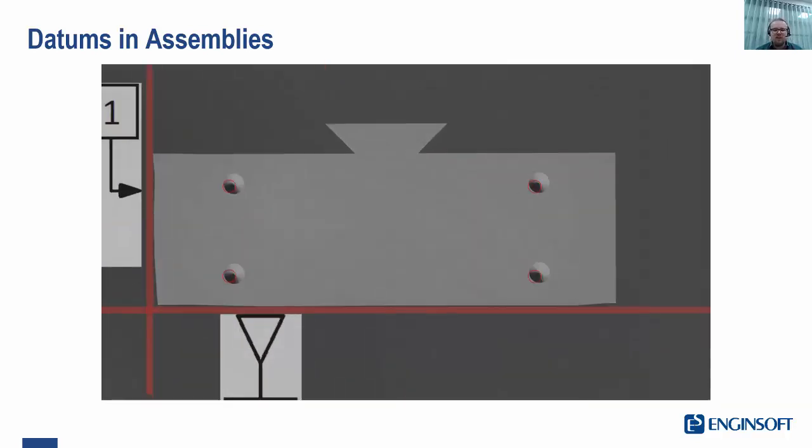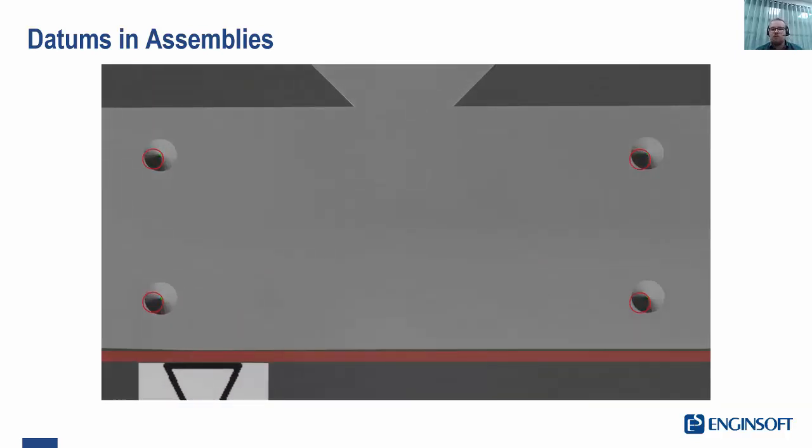And if we were to use primary datum B and secondary datum A, we would get different results. So this is really important for inspection repeatability. It allows us to say that our part is faced up onto one surface first and then a second surface once it's been attached to that one and which degrees of freedom are controlled where. We discuss this in more detail in the course, as I mentioned.